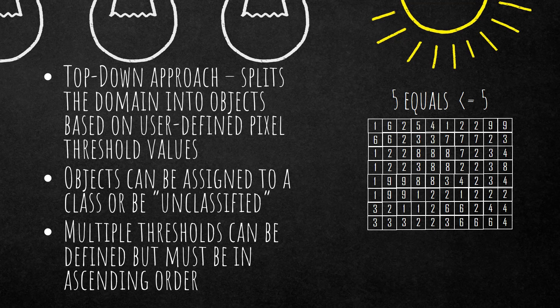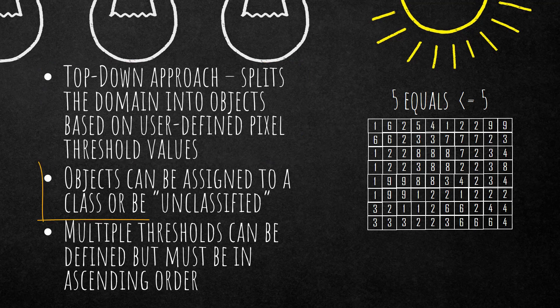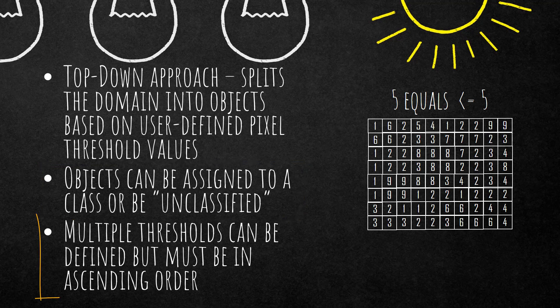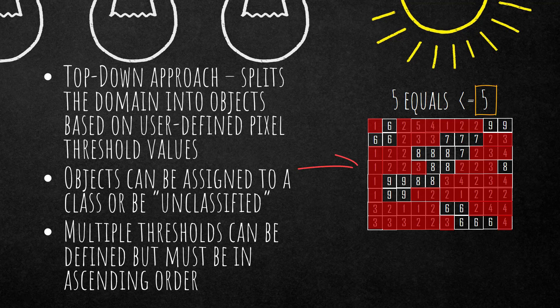This is a top-down approach which splits the domain into objects based on user-defined pixel threshold values. The generated objects can be assigned to a class or be unclassified, so you instantly can classify your image objects. It's based on multiple thresholds — you can use just one, but using multiple thresholds is more useful, and if you define multiple thresholds they have to be in ascending order. For example, if we set one threshold to five, all values lower than five will be put into one image object and class, and all values higher than five into another class.